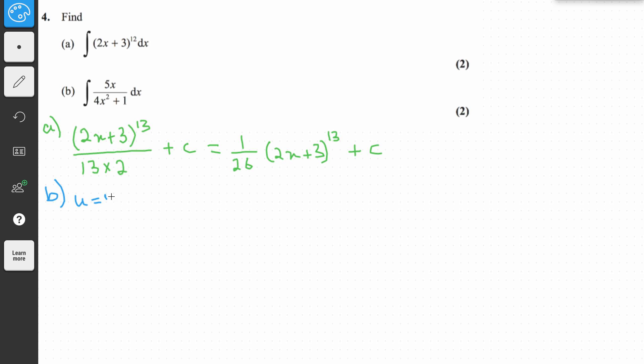So let u equal 4x² + 1, and because u is 4x² + 1, that's why du/dx will be 8x, and therefore dx/du will be 1 over 8x. Now write the question again and just replace this 4x² + 1 with u and multiply that by dx/du. So you write the integral of 5x over u, which is 4x² + 1, and then multiply that by dx/du. dx/du is 1 over 8x, so 1 over 8x with respect to u this time.